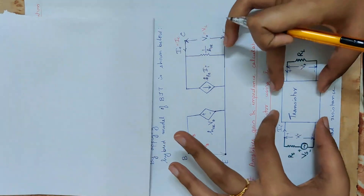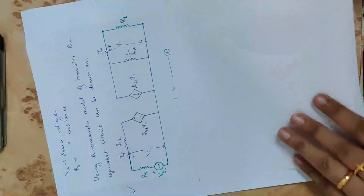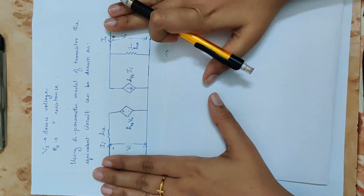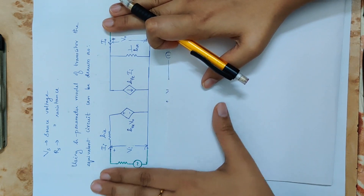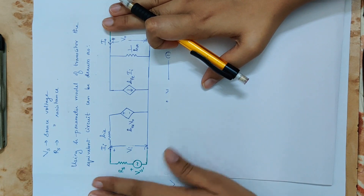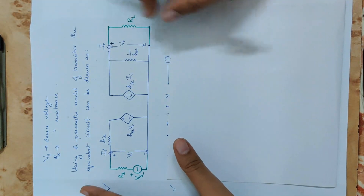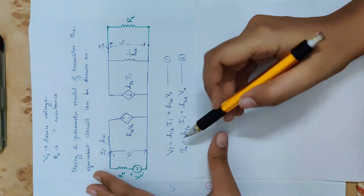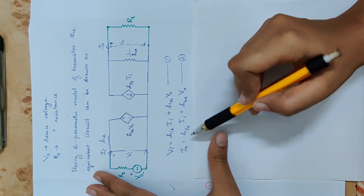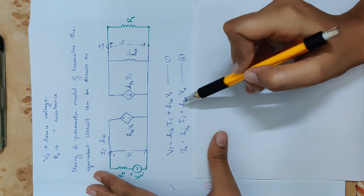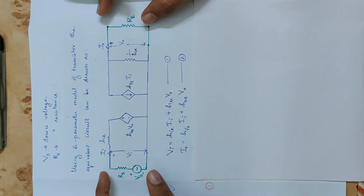We replace the transistor with the h-parameter model. The circuit shows the h-parameter model of BJT with the source voltage and source resistance RS on the input side, and the output load resistance RL. The two key equations are: VI = HIE × II + HRE × VO, and output current IO = HFE × II + HOE × VO.